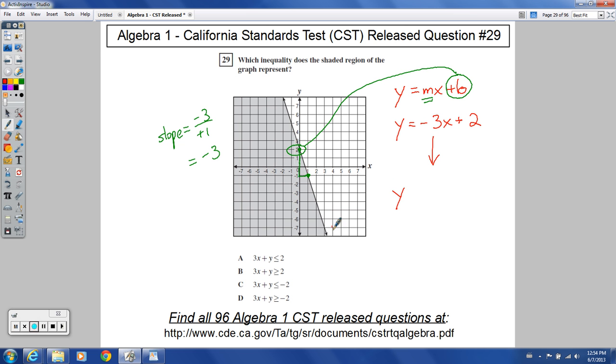It's or equal to, because you have a solid line right here. So we say y is less than or equal to negative 3x plus 2. Go back to the previous question, number 28, if you need a little more explanation on my whole roof analogy and why that works.